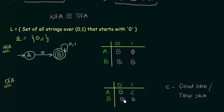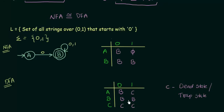But the DFA table is not yet complete. In a DFA, we must specify clearly where every state goes on each input. We have introduced a new state C, so we need to define its transitions. Since C is the dead or trapped state, any input causes it to stay in C itself — C on input 0 stays in C, and C on input 1 stays in C. Now this is a complete state transition table for the DFA.